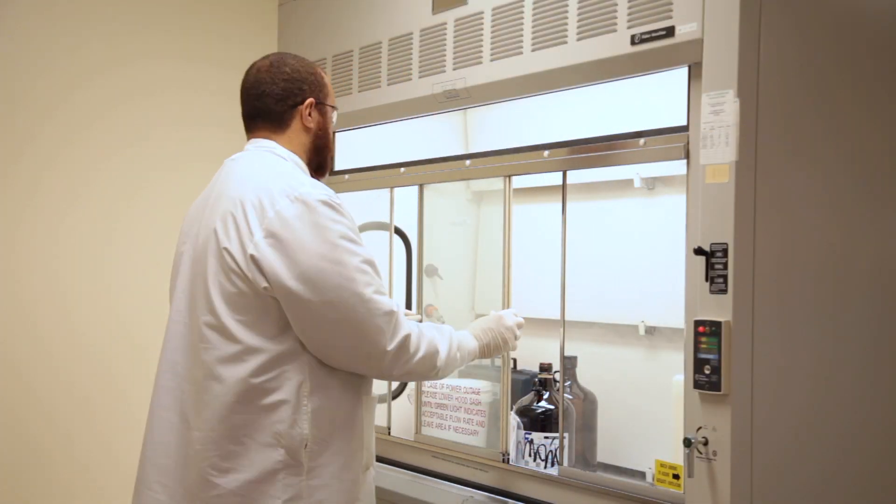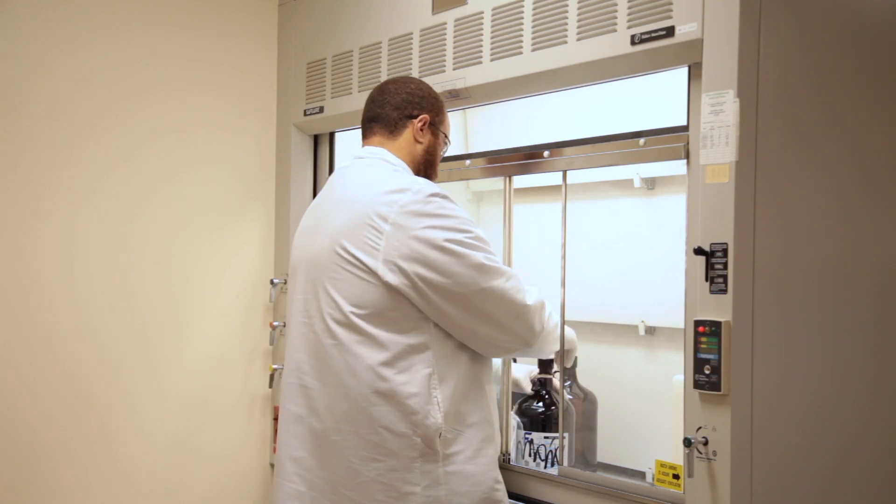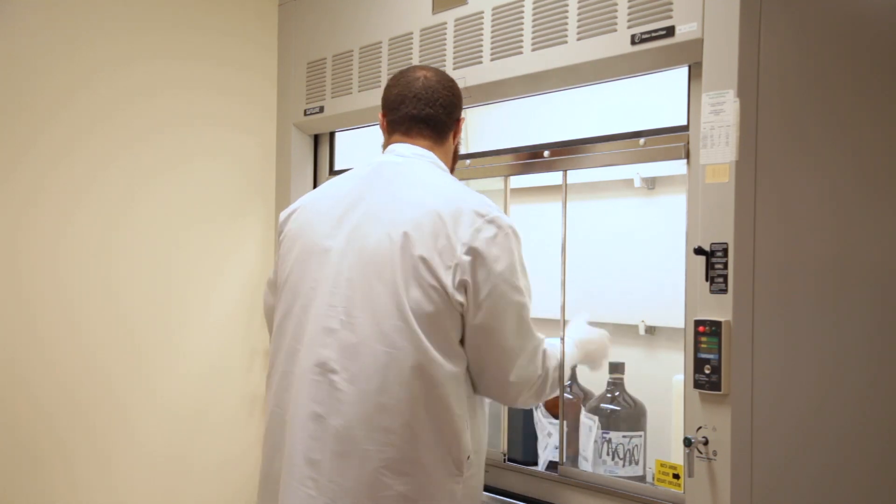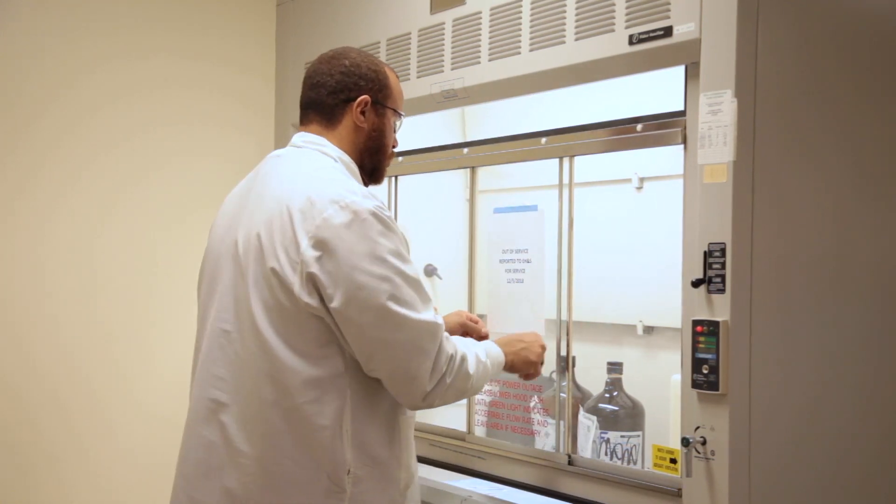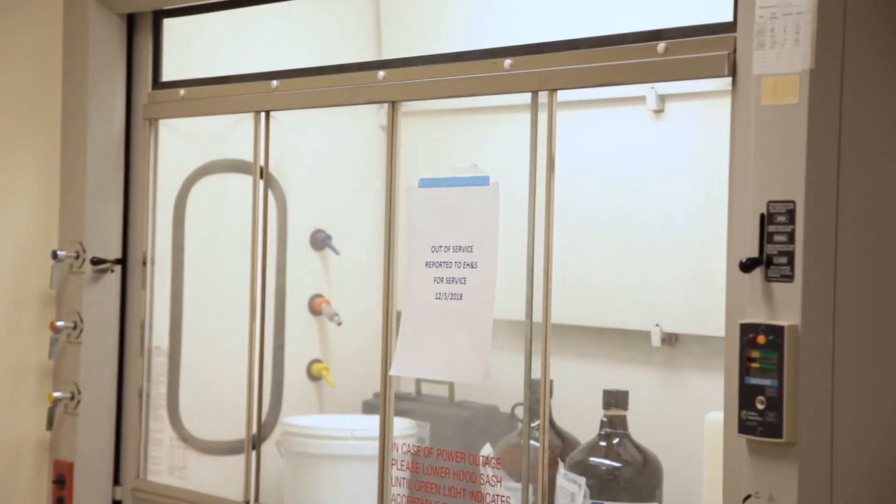If you notice a fume hood is not functioning properly, stop using the hood, close all the containers, close the sash, put a DO NOT USE sign on the fume hood, and submit a work order to Facilities Management for repair.